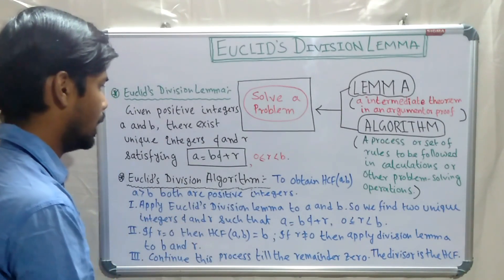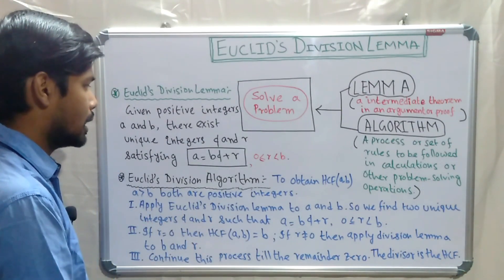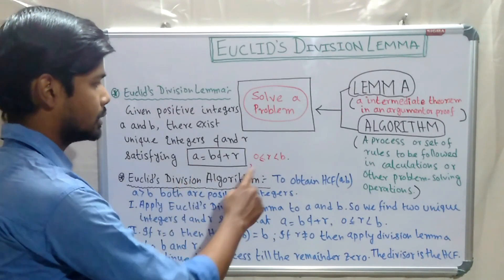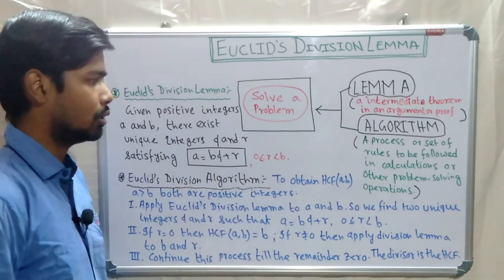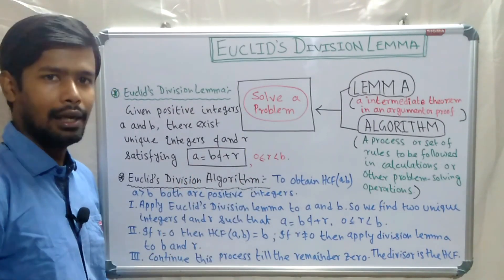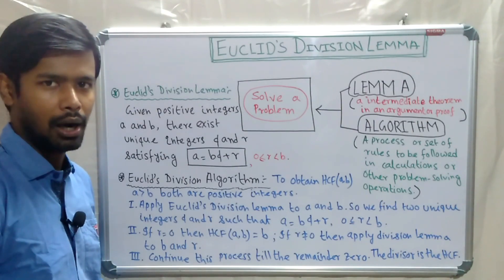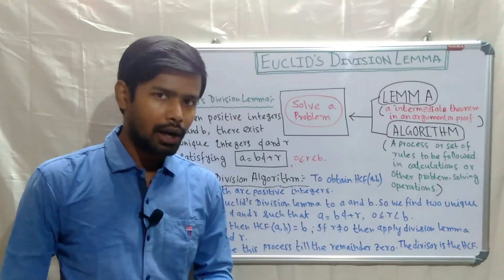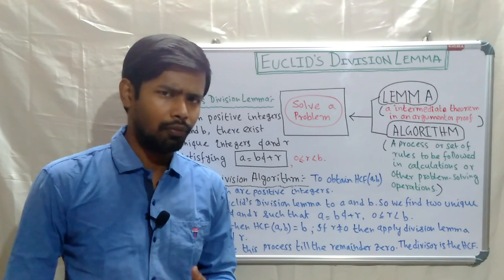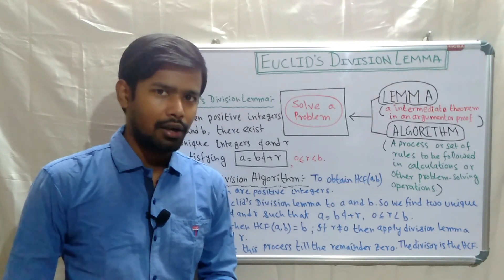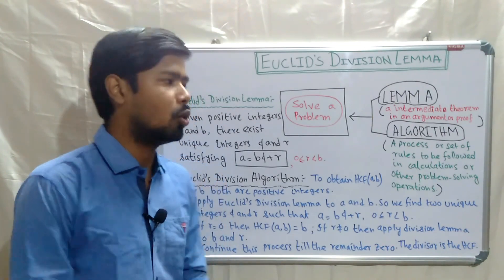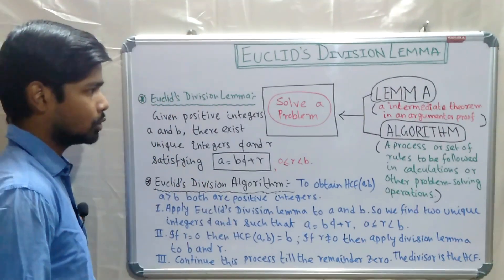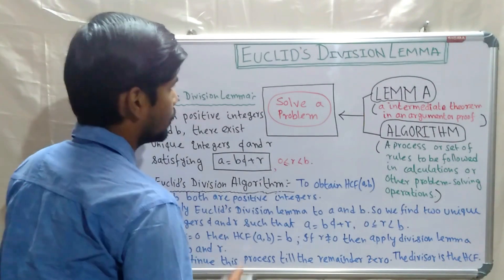Euclid's division lemma states: a = bq + r, where 0 ≤ r < b. You may have already encountered this idea in third or fourth standard.